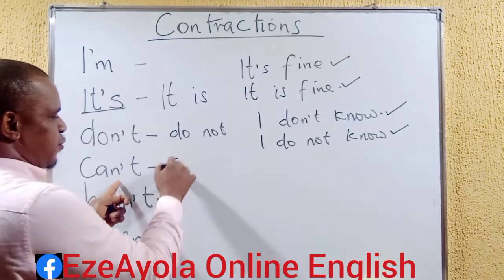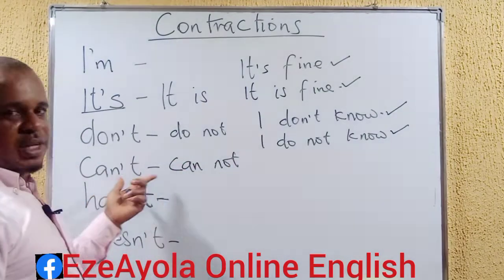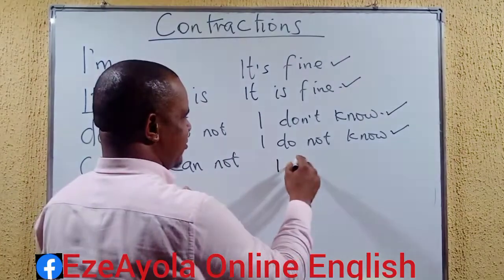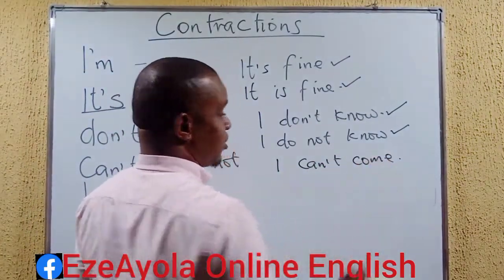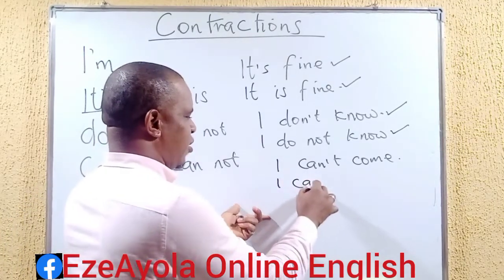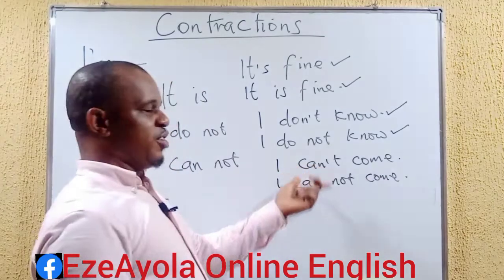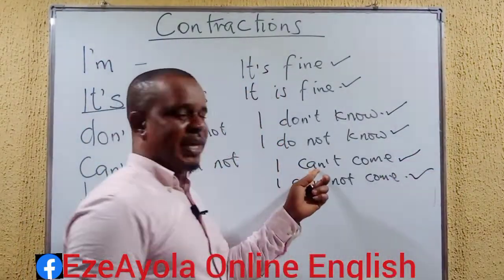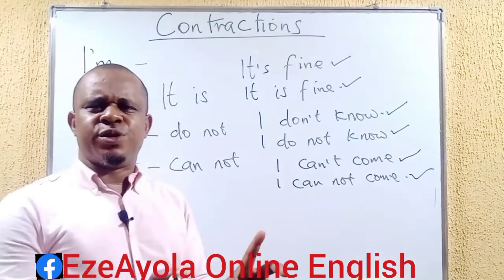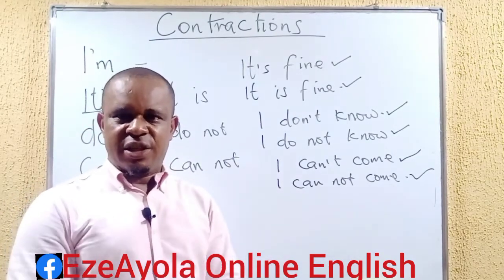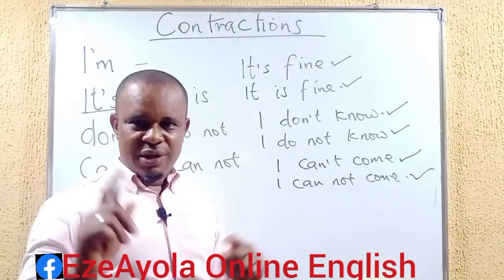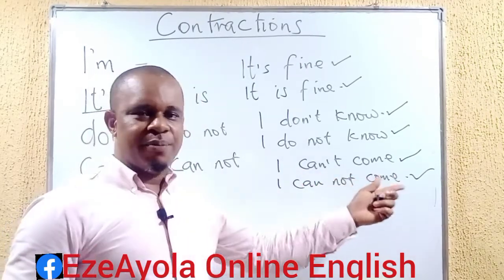'Can't' stands for 'cannot'. 'I can't come' — or, 'I cannot come.' Whether you use one or the other, they are both correct. 'I can't come' is the contracted form; 'I cannot come' is the full expression — you are saying the same thing. It helps us to lessen the stress in written English. Instead of writing as much as 'I cannot', you contract it this way. That's the major advantage.